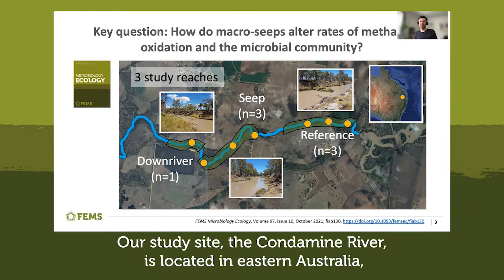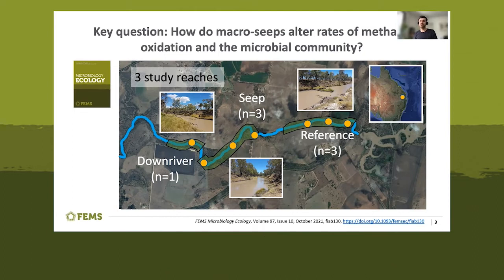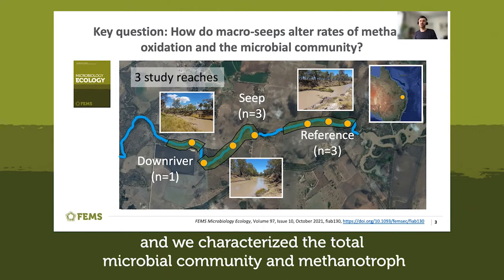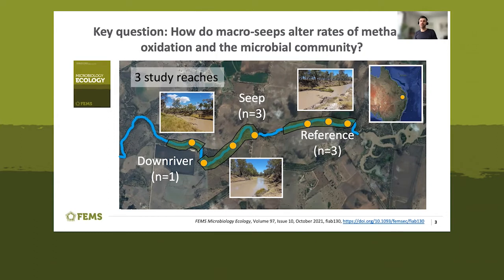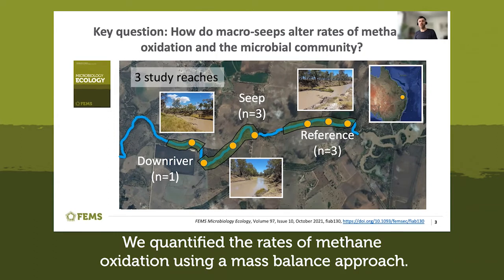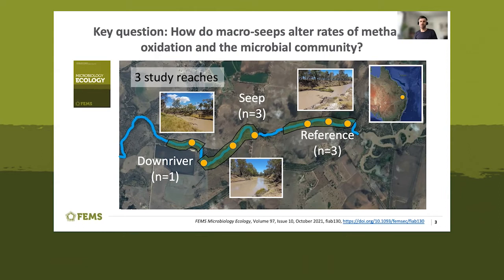Our study site, the Condamine River, is located in eastern Australia. We characterised the total microbial community and methanotroph community composition of benthic sediment using DNA isolated from sediment cores. We quantified the rates of methane oxidation using a mass balance approach.